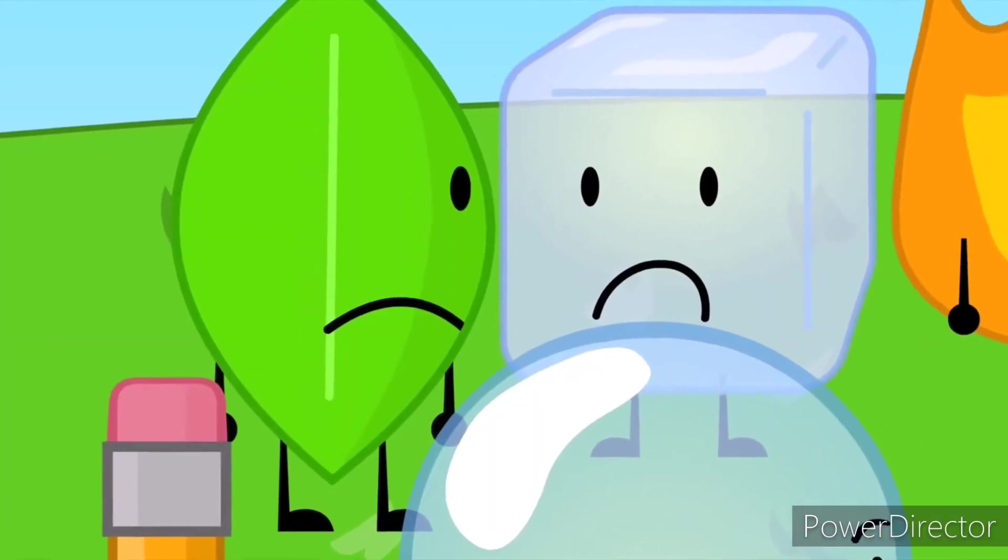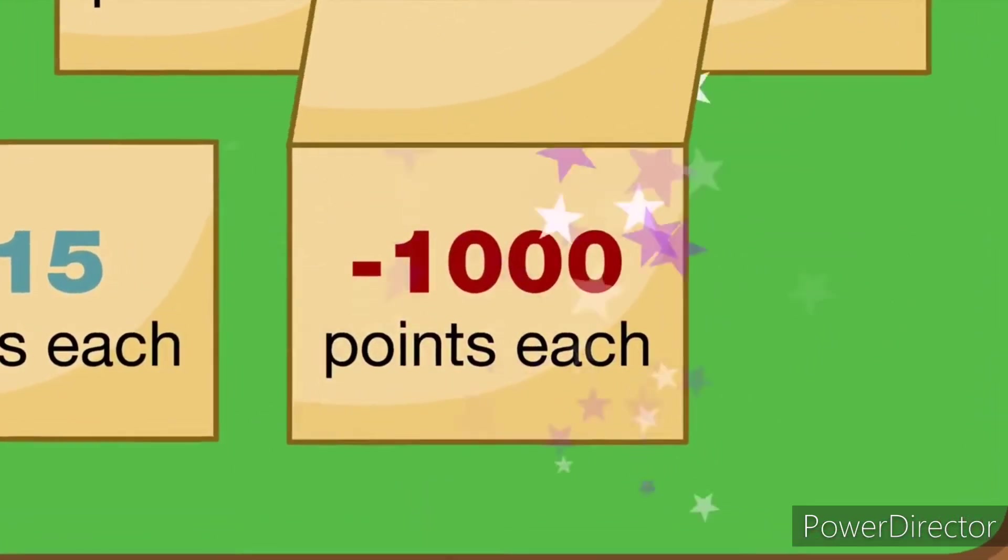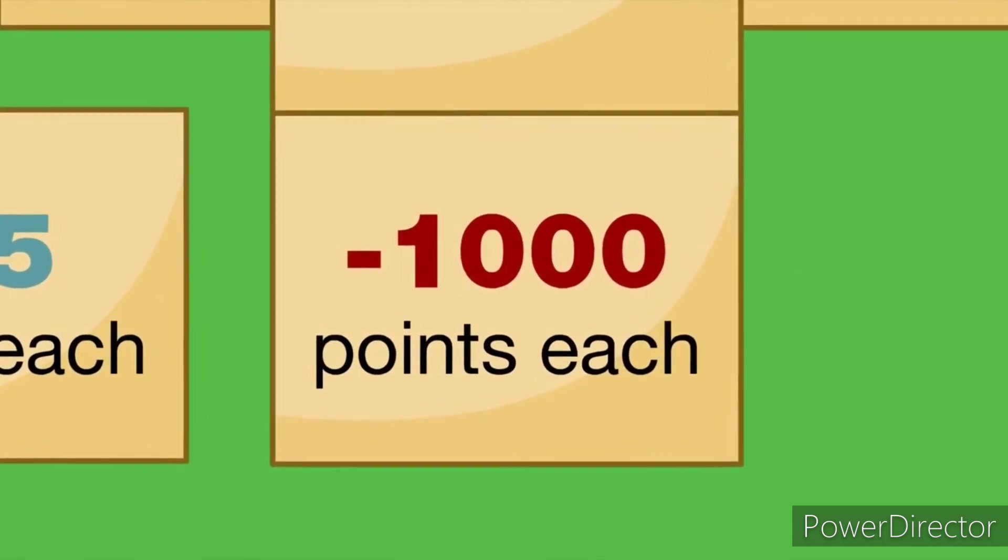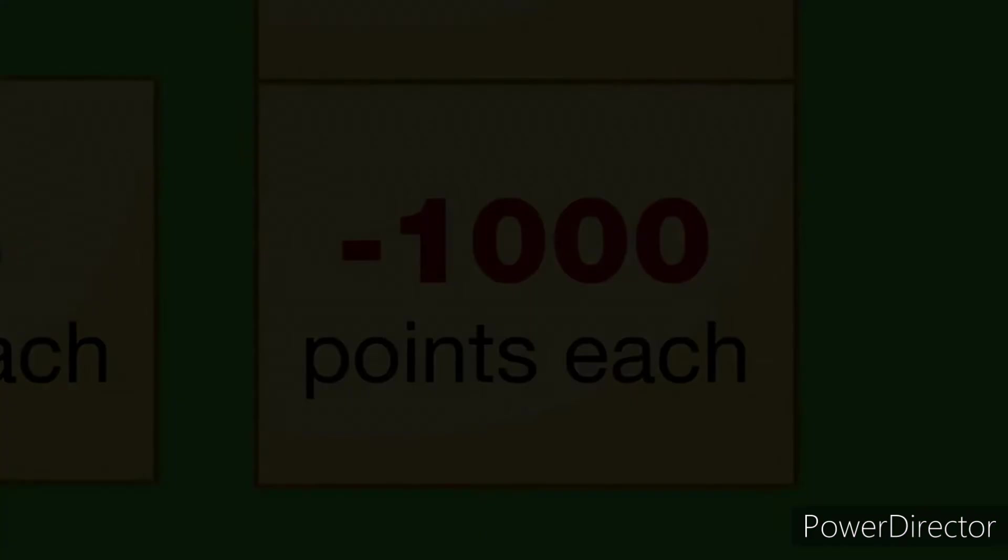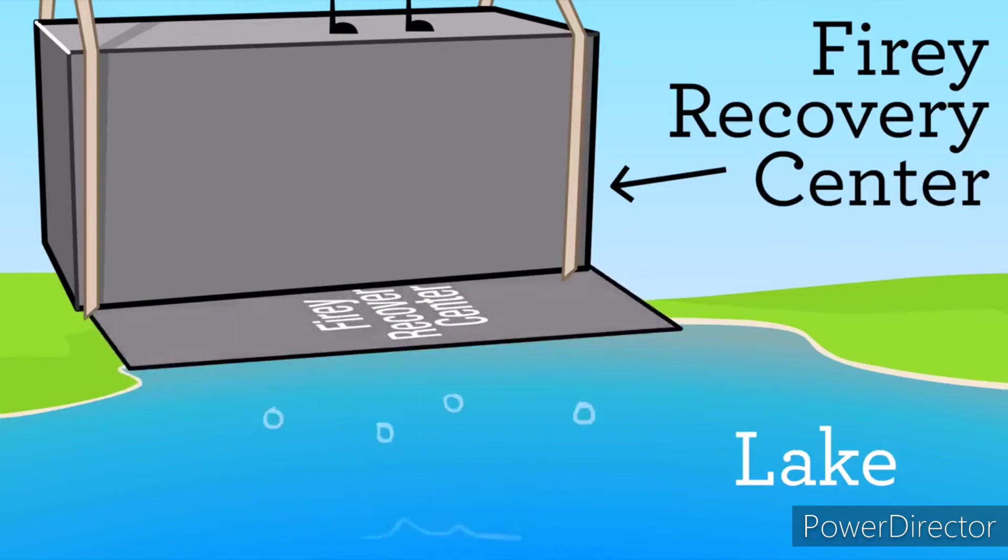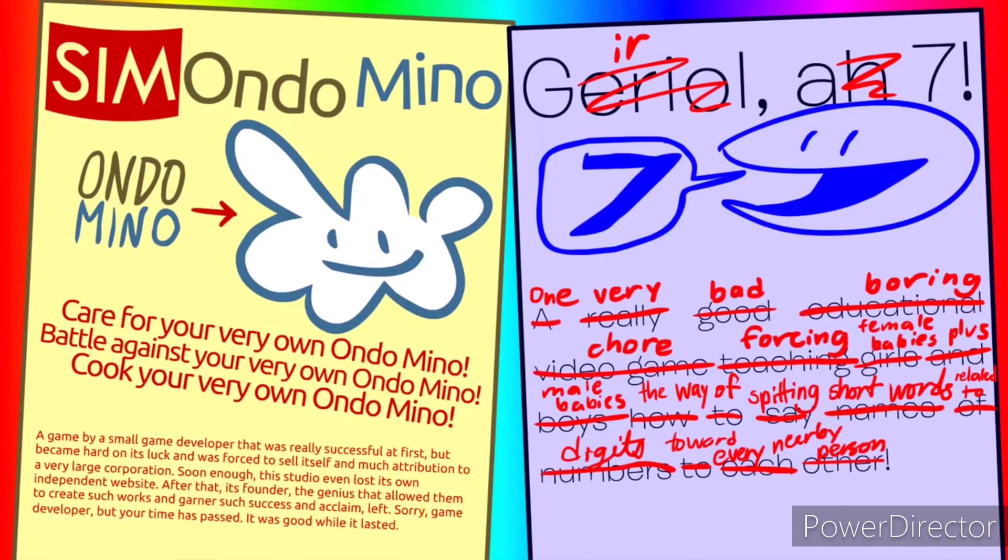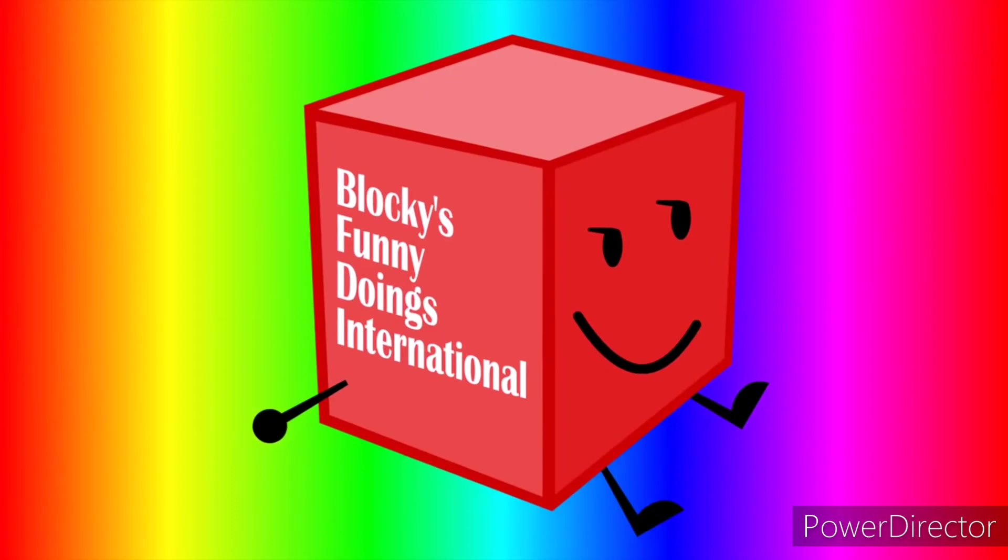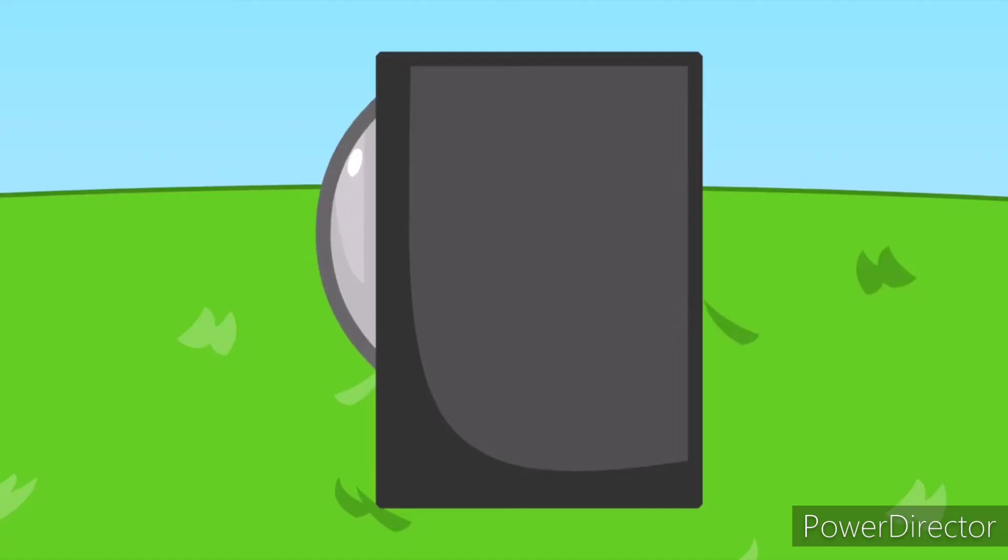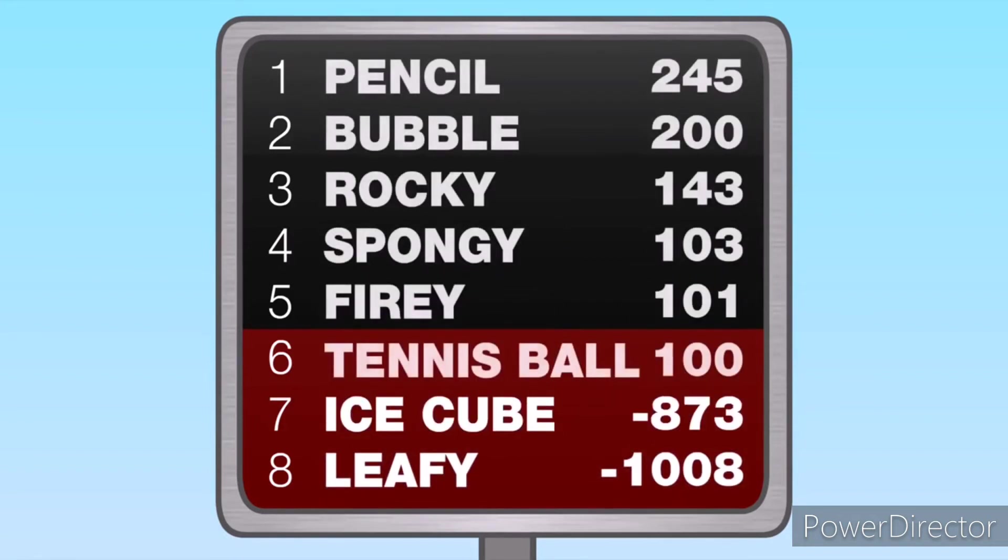Ice Cube and Leafy, you received a penalty. Hey guys, for a prank, suspend the Fiery recovery center above a lake. It's simple. Idea by Sim on Domino and Girl R7. This program was brought to you by Blocky's Funny Doings International. Leafy and Ice Cube, you each lost 1000 points.